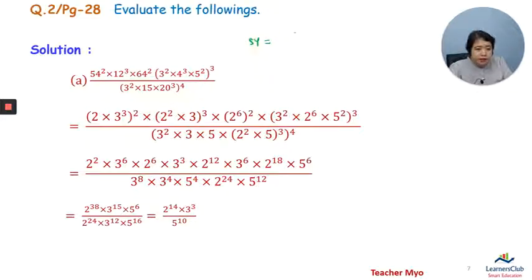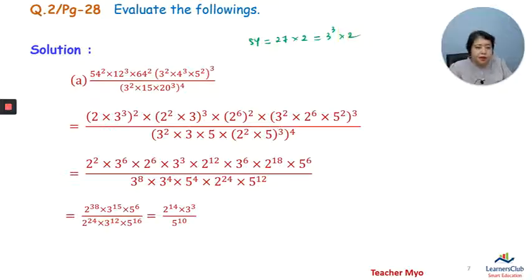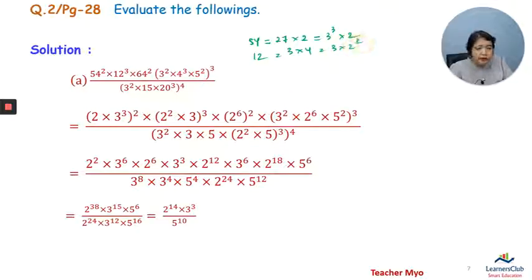Here is day 7. 2 pi, 27, 3 pi, 2 pi, 12, 3, 2 pi, and then 64.